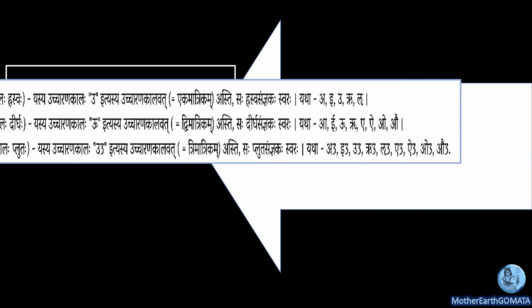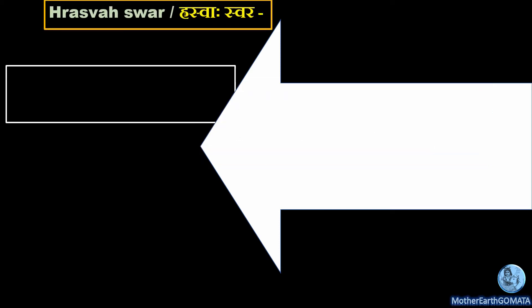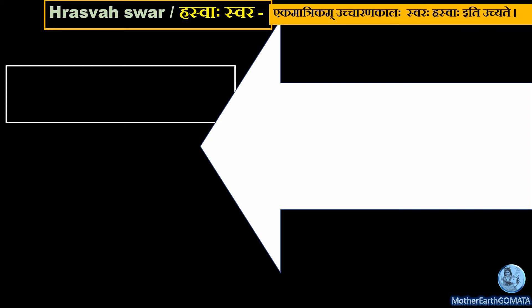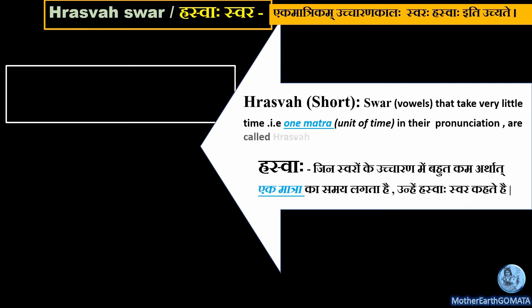As we have learned, the nine Swaras are classified into three types based on the time taken for their pronunciation: Hraswa, Dirgha, and Pluta. Maharishi Panini, by giving the example of Swar 'U', has said that all nine Swar have their respective classification as per the time required for their pronunciation. Let us understand Hraswa Swara first: 'Ek matrikam uccaran kaal swara Hraswa iti uchyate', which means vowels that take very little time — that is, one Matra unit of time — in their pronunciation are called Hraswa Swar.